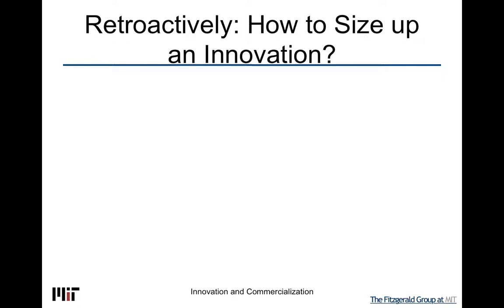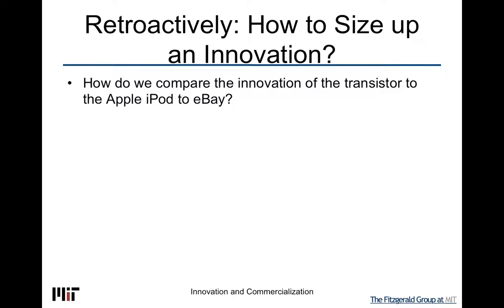We can carefully think about a particular innovation and what has transpired to get that innovation into the marketplace, which gives us an idea of how incremental or how fundamental it is. This allows us to compare things like the transistor to the Apple iPod or to eBay. Most of you probably have the intuition that the transistor is the most fundamental — when it was invented, it created a multi-decade growth spurt, which resulted in the Apple iPod and eBay. But intuition may be incorrect at times.